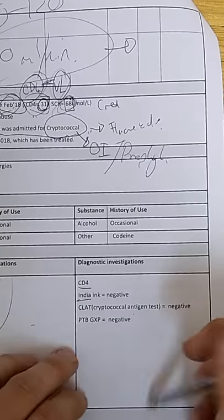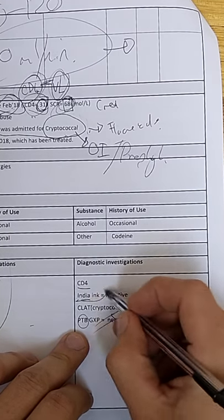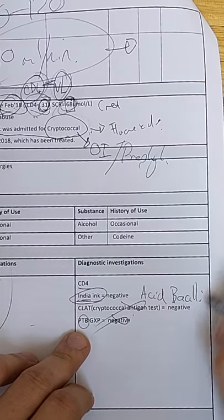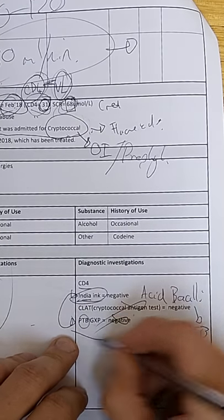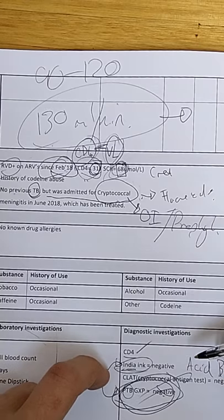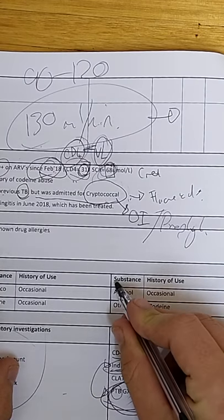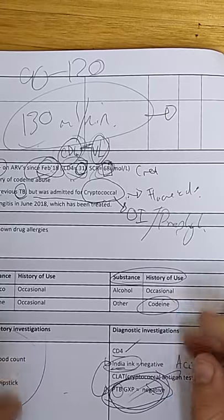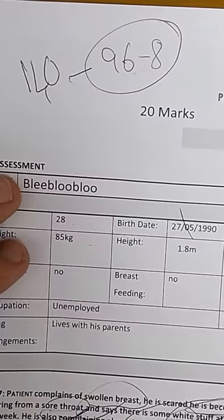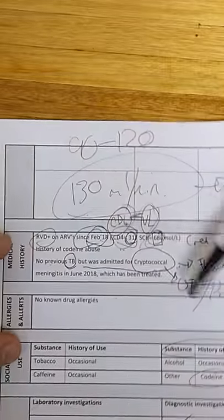So here we can see previous, no previous TB, but he was admitted for cryptococcal meningitis. So he had cryptococcal meningitis as well. Does it make sense? Yes, but look at this very low CD4 count of 31. So it makes sense. And now, now you have to remember something else, which are in the guidelines for opportunistic infection treatment and prophylaxis.